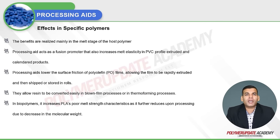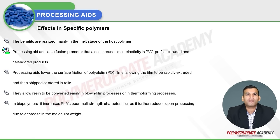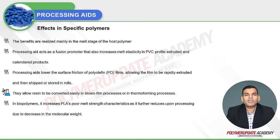Regarding the effect of process aids on specific polymers, the benefits are realized mainly in the melt stage of the host polymer. Processing aid acts as a fusion promoter and increases melt elasticity in polyvinyl chloride profile extruded and calendared products. It lowers the surface friction of polyolefin films, allowing the film to be rapidly extruded and then shipped or stored in rolls, and allows resin to be converted easily in blown film or thermoforming processes.